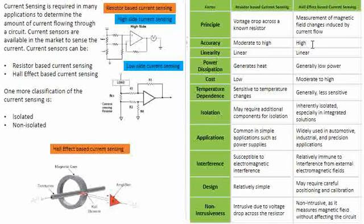Hall effect sensing is contactless, so power dissipation does not come into the picture and does not affect the path where the current is flowing. That is the biggest advantage in high power applications. Cost-wise, Hall effect sensors are costlier compared to resistors, so resistor-based sensing has lower cost. Temperature dependence is more significant in resistor-based current sensing — the resistors and passive elements around them are sensitive to temperature and have their own tolerances.